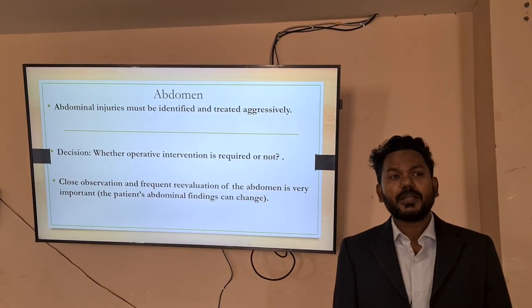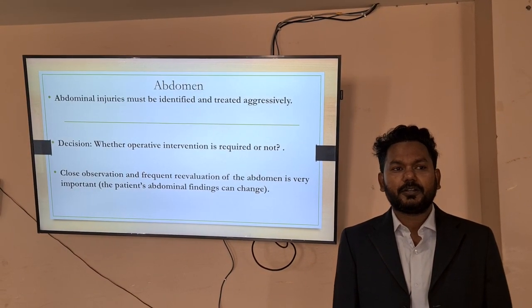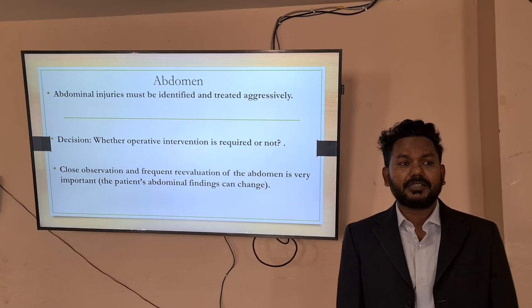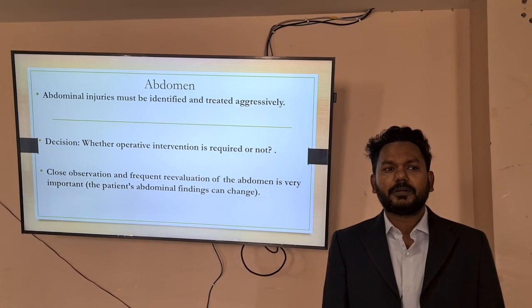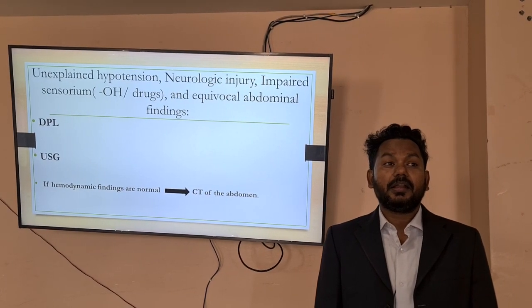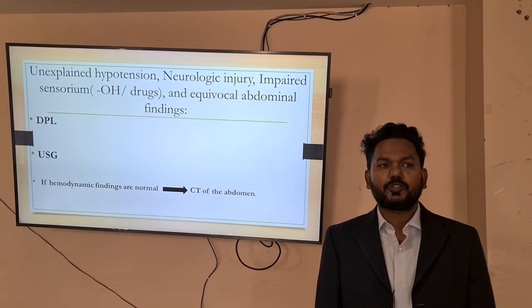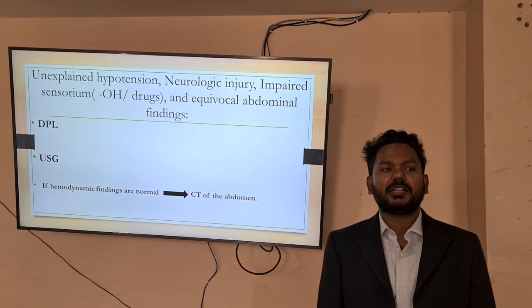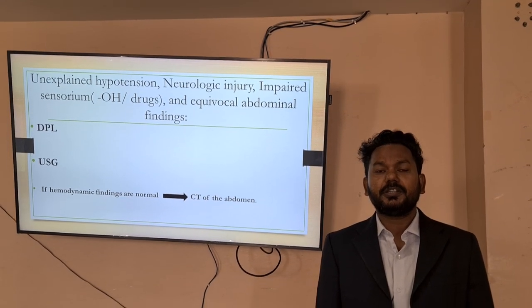Abdominal injury must be identified and treated aggressively. We should decide whether operative intervention is required and follow the concept of close observation and frequent re-evaluation of the abdomen, because abdominal findings can change over time. In cases of unexplained hypotension, neurological injury, impaired sensorium, or equivocal abdominal findings, please consider DPL and FAST as adjuncts. If the patient's hemodynamic condition is normal, we can consider CT of the abdomen.